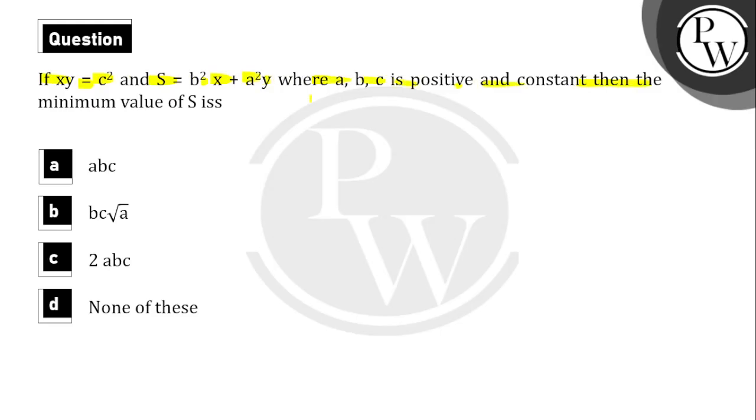Where a, b, c is positive and constant, then the minimum value of s is. Four options are given. We need to find the correct option.